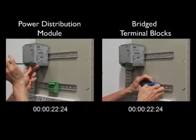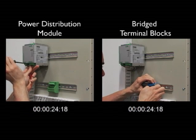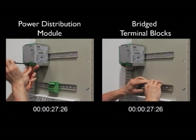Meanwhile, the installer on the right continues with mounting 16 individual terminal blocks, 8 for the positive and 8 for the negative.